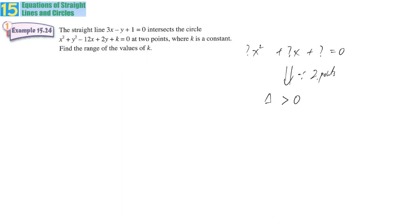They are talking about the point of intersection, so we are dealing with simultaneous equations: 3x minus y plus 1 equals zero, and x squared plus y squared minus 12x plus 2y plus k equals zero. From the first equation, we know that 3x plus 1 equals y, making y the subject.